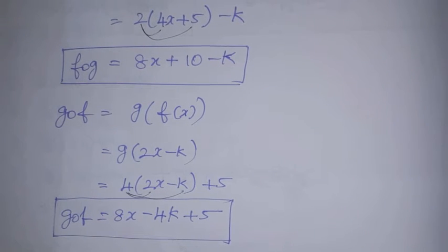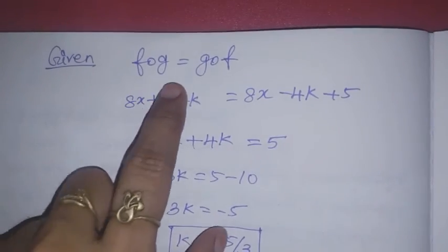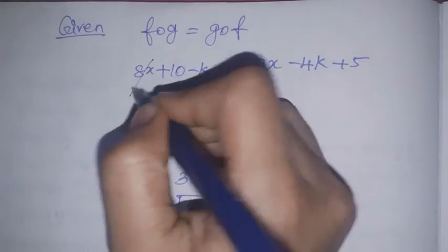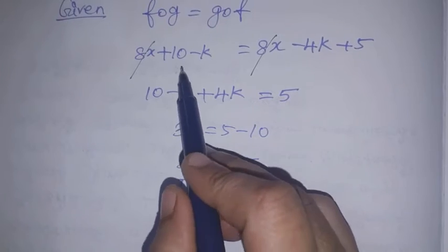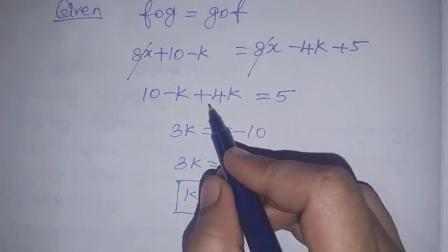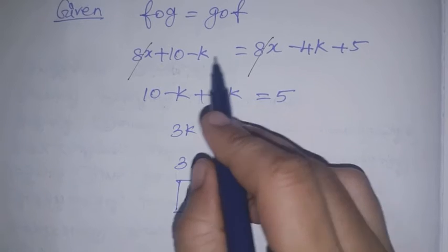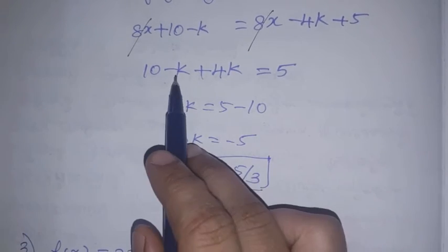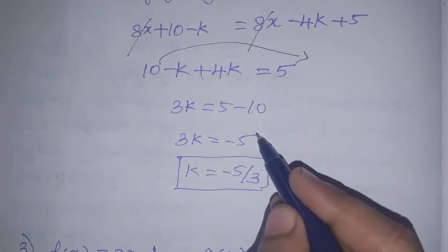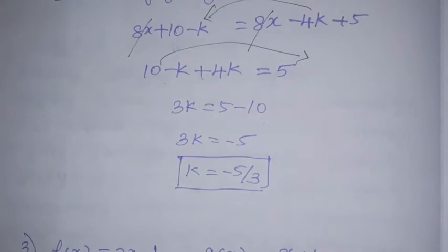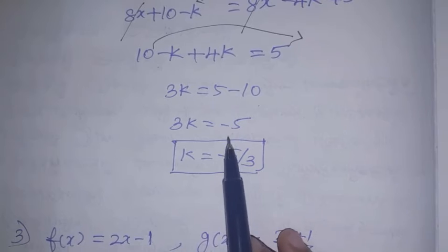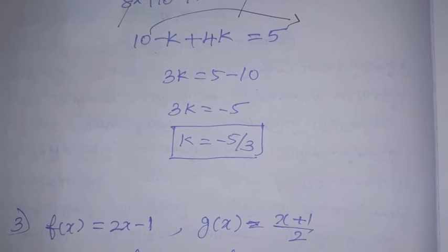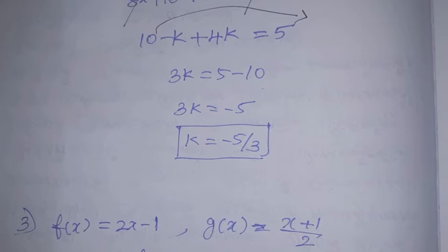Setting f∘g = g∘f: 8x + 10 - k = 8x - 4k + 5. The 8x terms cancel. So 10 - k = -4k + 5, which gives -k + 4k = 5 - 10, so 3k = -5. Therefore k = -5/3.